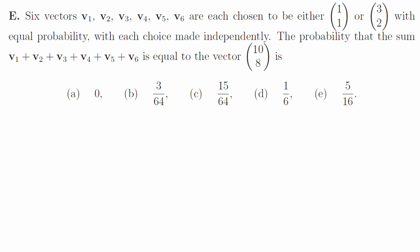1e. In order to make the vector 10, 8, we'd need exactly 2 of the vectors to be 3, 2, and the other 4 to be 1, 1. There are 15 ways that that could happen, each with probability 1 over 64, so the answer is c.